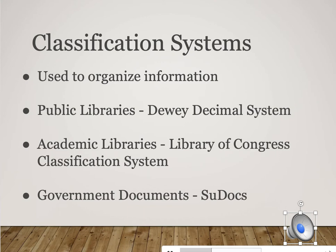In academic libraries, like Rasmussen or the UAF library, we use a system called the Library of Congress classification system. This is standard in any academic library across the country. It's a slightly more complex system because academic libraries tend to have more specialized information. You might do research in biology and want to know about a very specific plant or genome, or use archives with really specialized information. You might also hear it called LC or LOC.